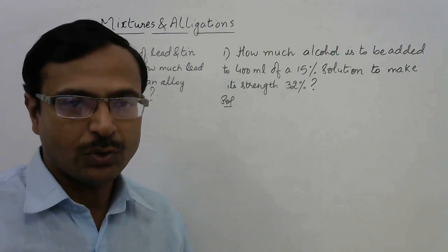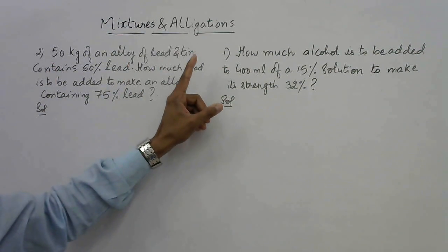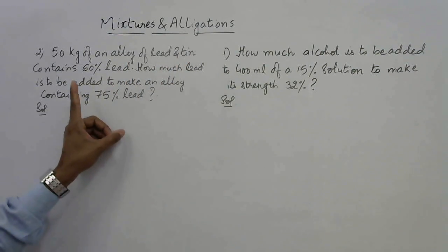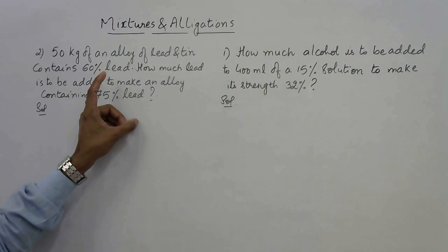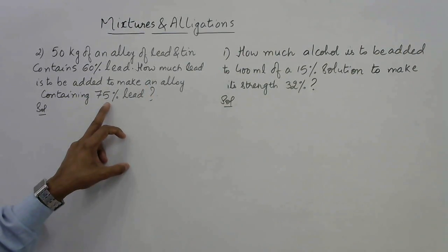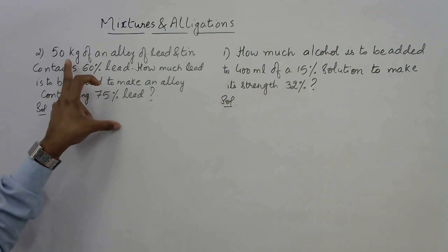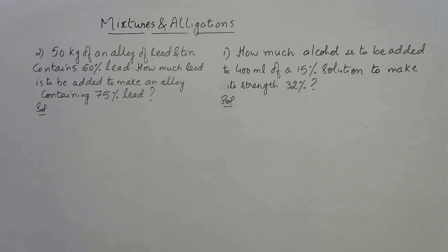In the second question we have a 50 kg alloy of lead and tin. It contains 60 percent lead, so out of 50 kg, 60 percent is lead. We need to make an alloy containing 75 percent lead, so the concentration of lead must be increased by adding more lead. How much lead is to be added is what we need to find.